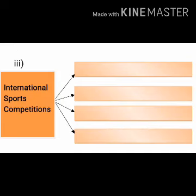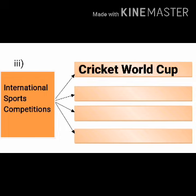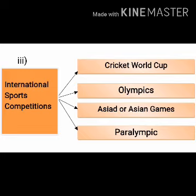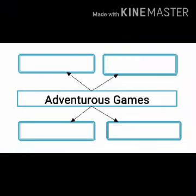Now see the third web: international sports competitions. We have to write the names of those sports competitions which are held at the international level. The first one is Cricket World Cup. In the second box write down Olympics. In the next box write down Asian Games. And in the last box write down Paralympics. Now write down the third web answers.